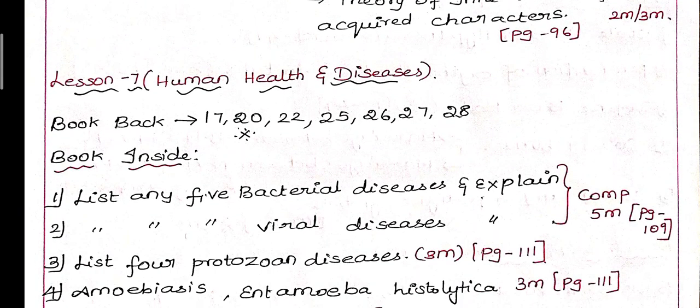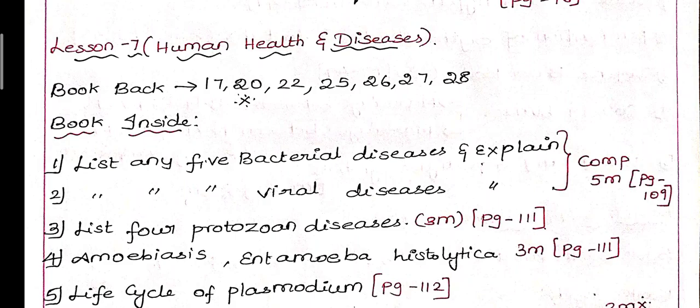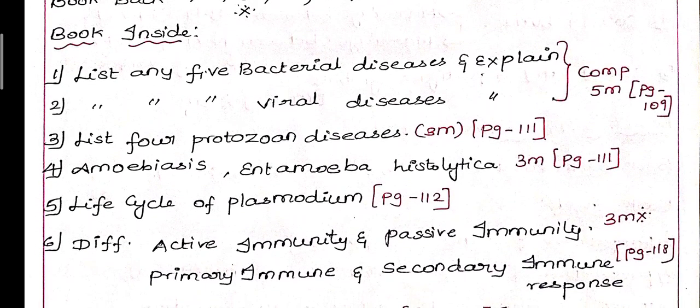Moving to Lesson 7: Human Health and Diseases. Book back questions are 17, 20 (structure of immunoglobulin, very important), 22, 25, 26, 27, and 28. Now for book inside questions: